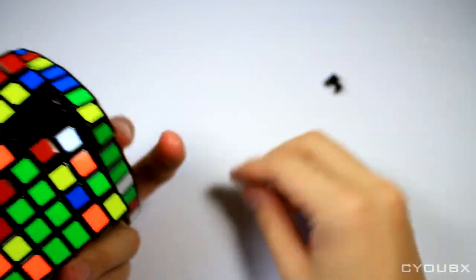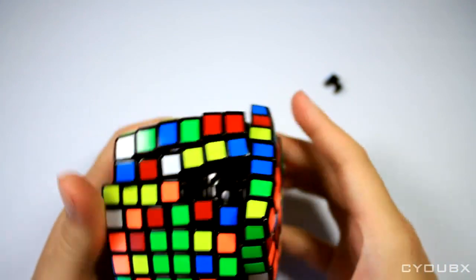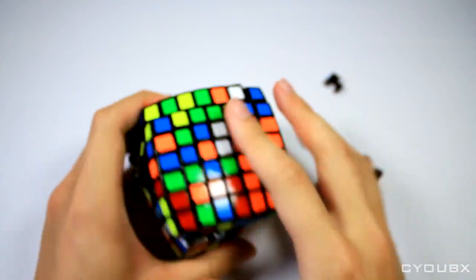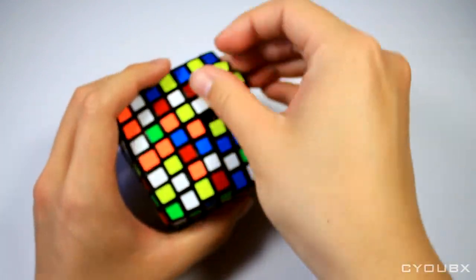If you prefer pillowed 7x7, then the AoFu is a great choice. However, especially with price considered, the mini Xingxiao is a better default choice for those unsure.